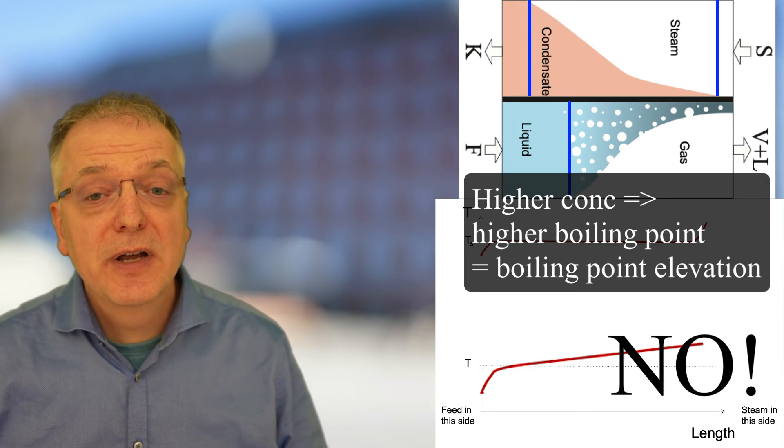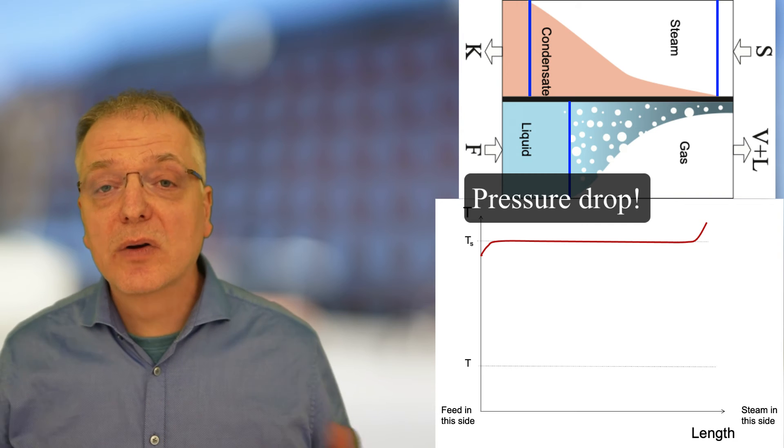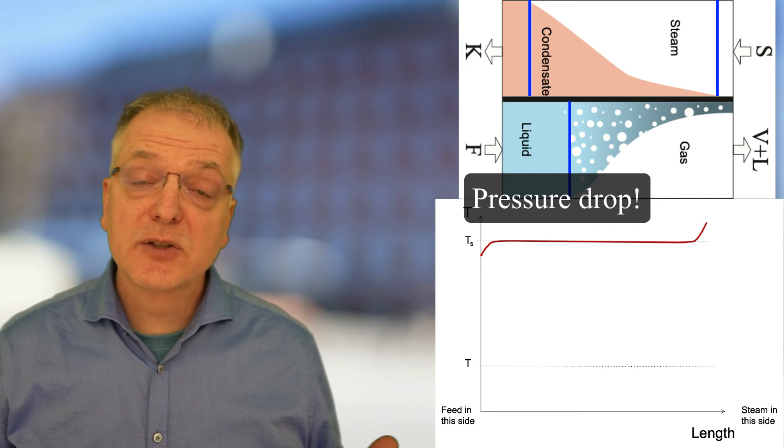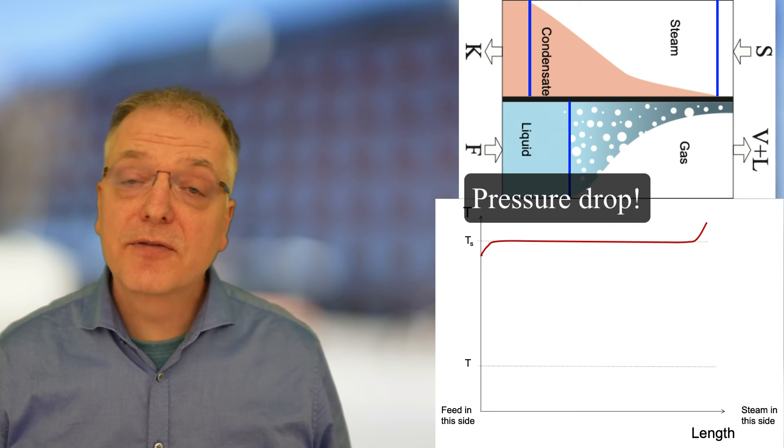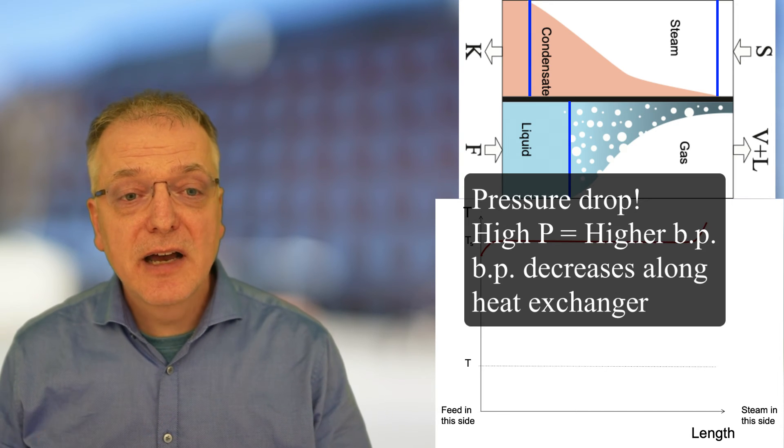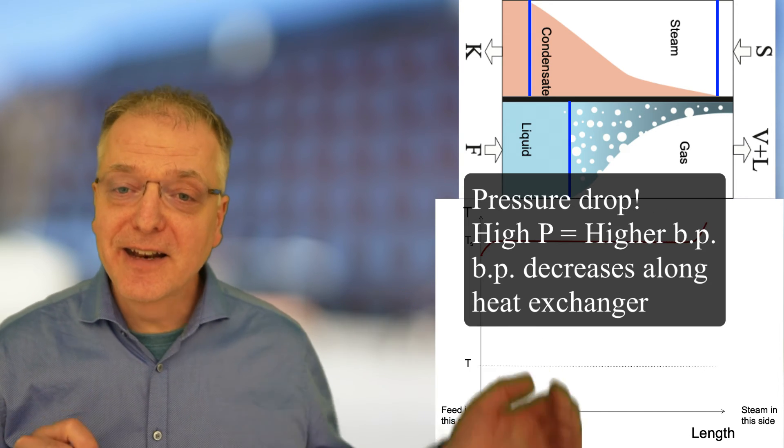In a real evaporator, there is always a pressure drop along the heat exchanger. And, as we know, the boiling point is higher for higher pressures. Thus, the boiling point is higher in the middle than at the end.